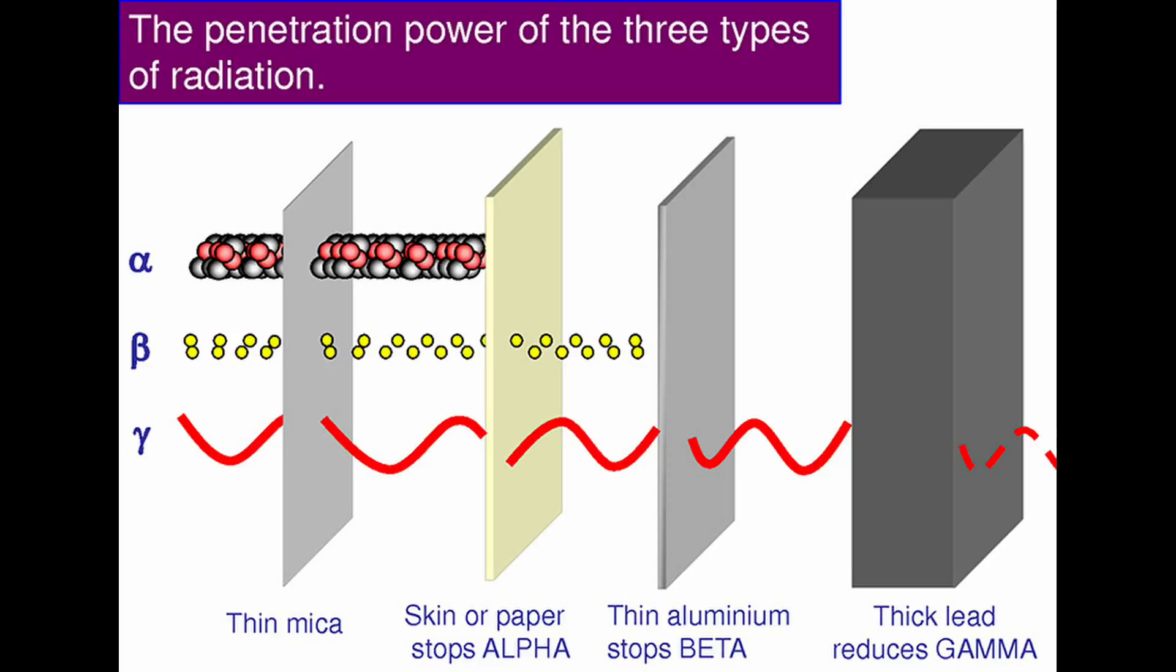Mica windows are used when you need to detect alpha radiation. Alpha radiation is virtually harmless outside the body, but extremely dangerous when it is inside of the body. An alpha particle is identical to the nucleus of a helium atom.